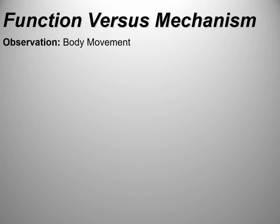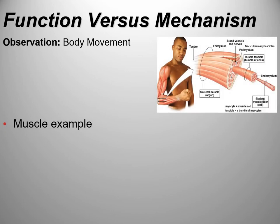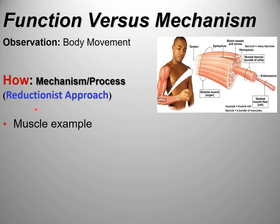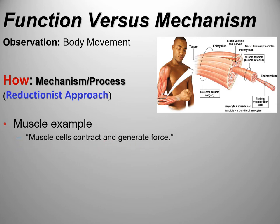Here's an example of function versus mechanism using skeletal muscle. We're going to use a reductionist approach in this class — we'll try to drill down to a point of cellular and subcellular mechanism. We're not going to get into all of the proteins, but we will talk about proteins at certain times. For instance, saying 'muscles contract and generate force' — on an exam that's not going to be good enough in this class.